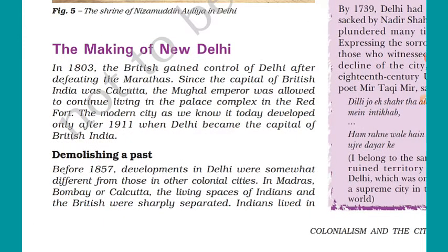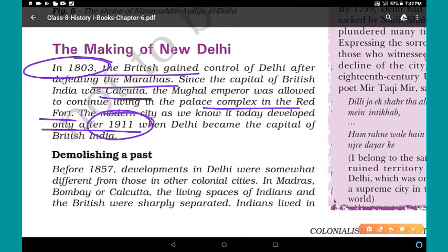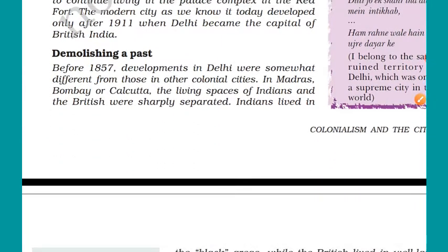The making of New Delhi: In 1803, the British gained control of Delhi after defeating the Marathas in the Anglo-Maratha War. Since the capital of British India was Calcutta at that time, the Mughal Emperor was allowed to continue living in the palace complex in the Red Fort. The modern city as we know it developed only after 1911, when Delhi became the capital of British India. In 1911, a Delhi Darbar was organized by George V during Lord Hardinge's tenure in India, and Delhi was declared the capital of India.